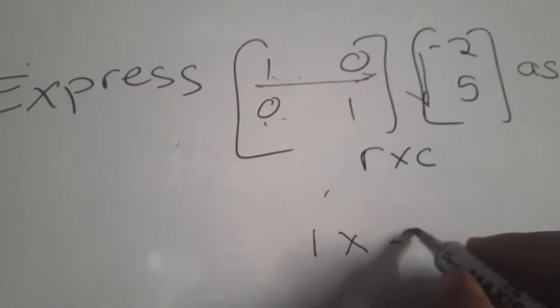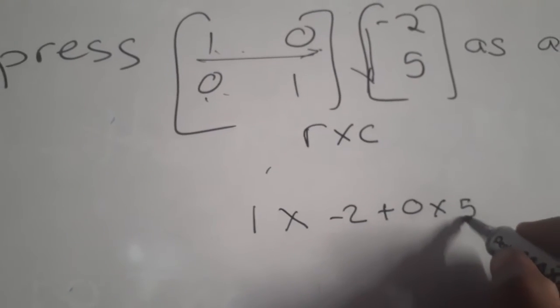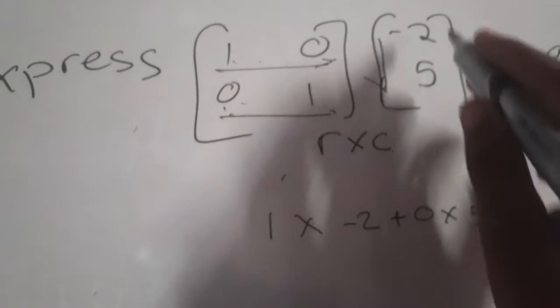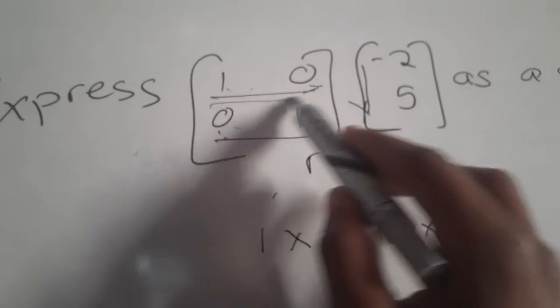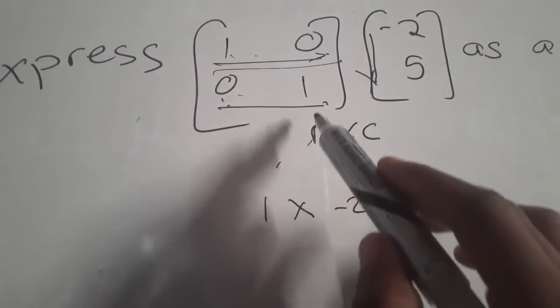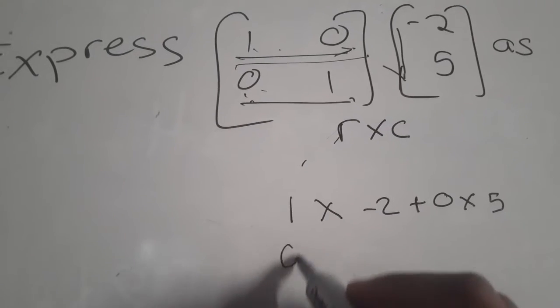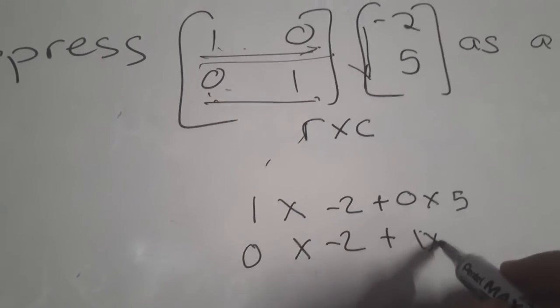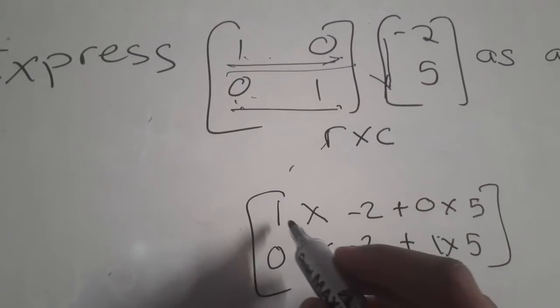Next we have this row times the same column. This row is at the bottom of the other row, so the product must be below that one. This becomes zero times negative two plus one times five.